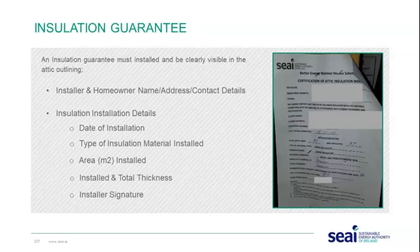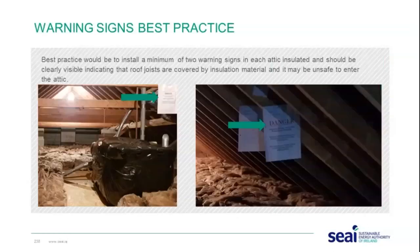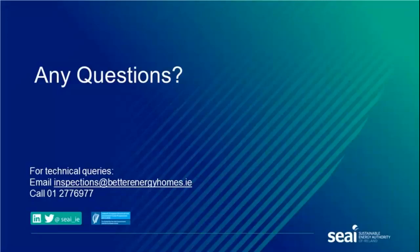As best practice, a minimum of two warning signs should be installed in each insulated attic, clearly visible, indicating that the roof joists are covered with insulation material and it may be unsafe to enter the attic. This is beneficial for homeowners who are not familiar with roof spaces and will prevent them from stepping in unsafe areas. That brings us to the end of the presentation.